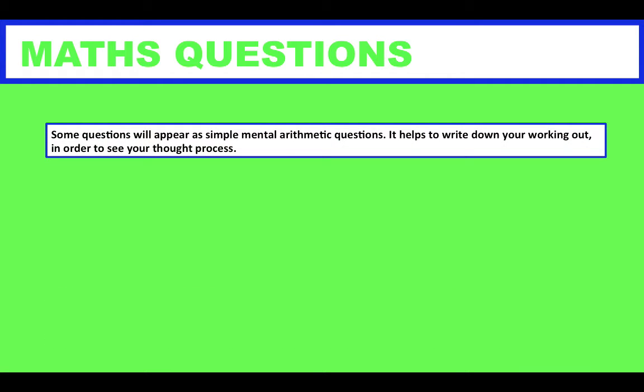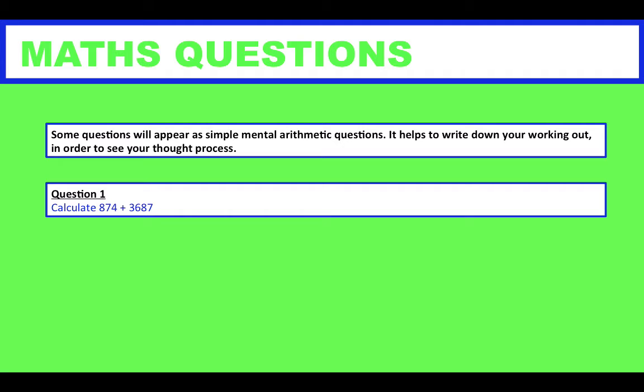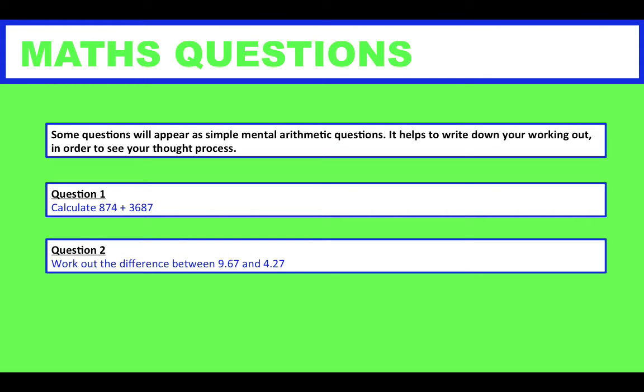Some questions will appear as simple mental arithmetic questions. It helps to write down your working out in order to see your thought process. So question 1: Calculate 874 plus 3687. Question 2: Work out the difference between 9.67 and 4.27.